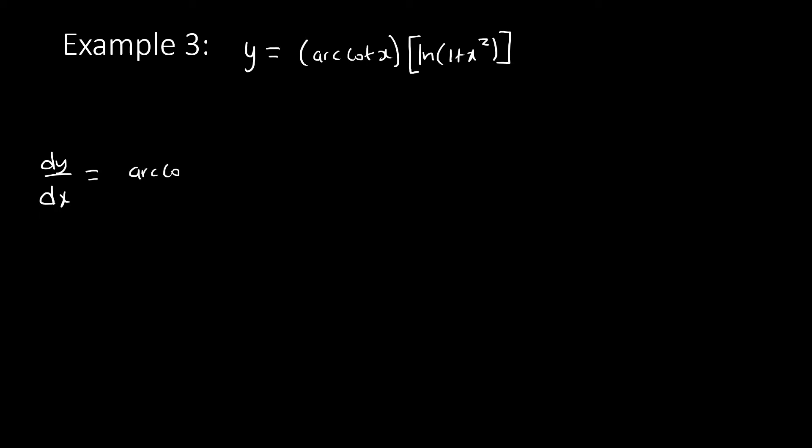We have cot and ln multiplying, so the answer: we start with arccot(x) times the derivative of ln. The derivative of ln will be one over that, times the derivative of that which is 2x, plus ln times the derivative of arccot.